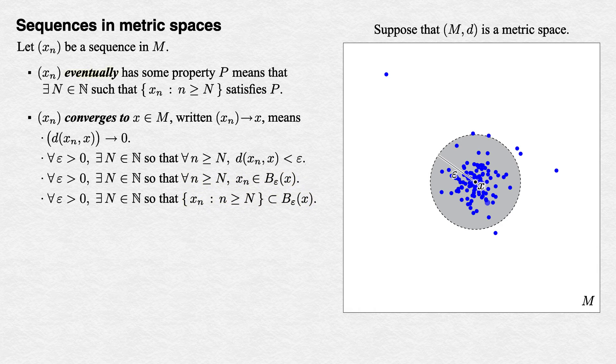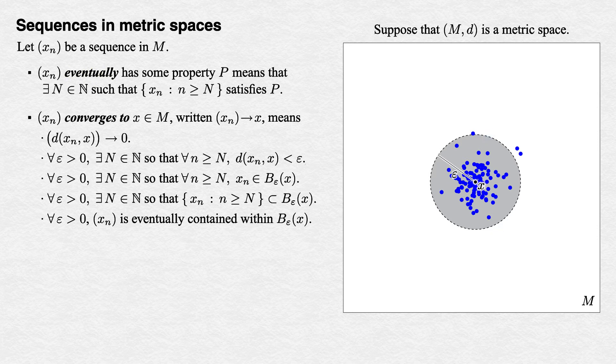We can now use Crothers' term 'eventually' to tighten this up. For all epsilon > 0, the sequence (x_n) is eventually contained in B_epsilon(x).